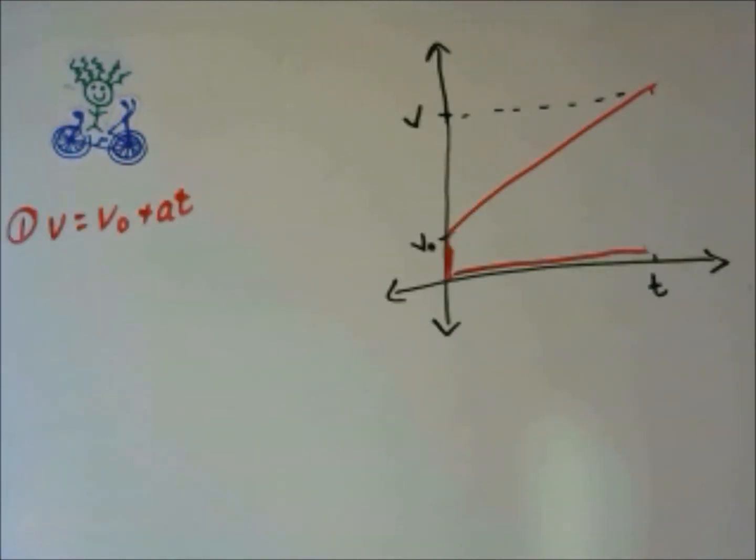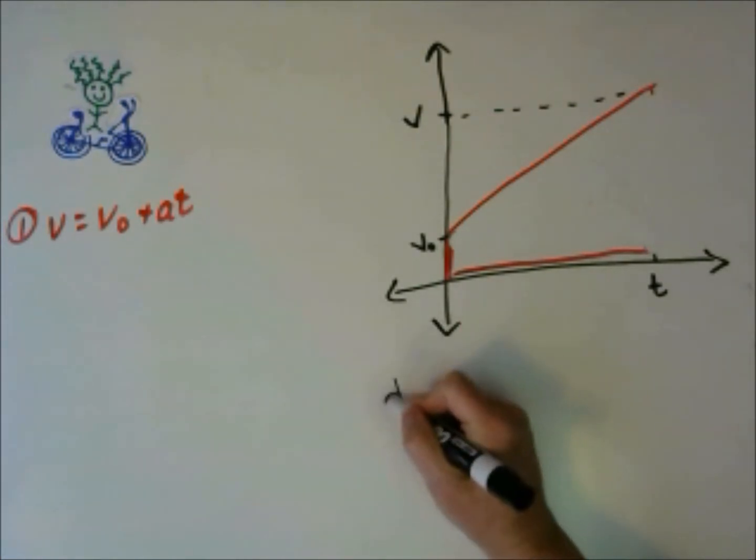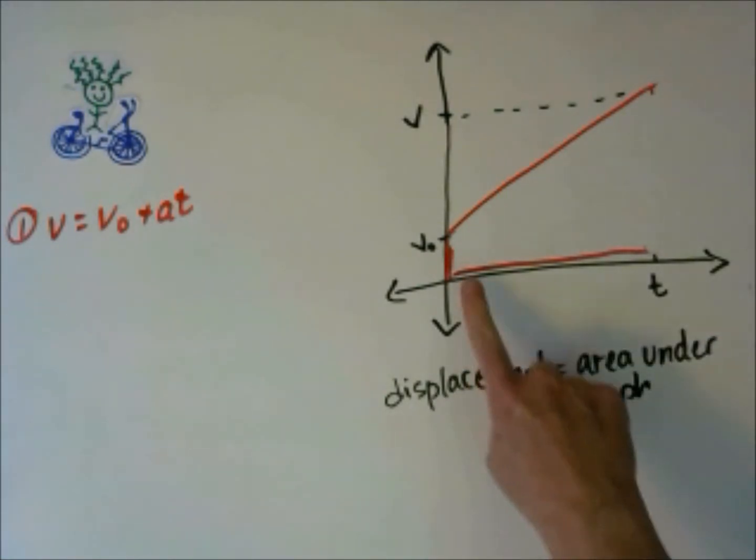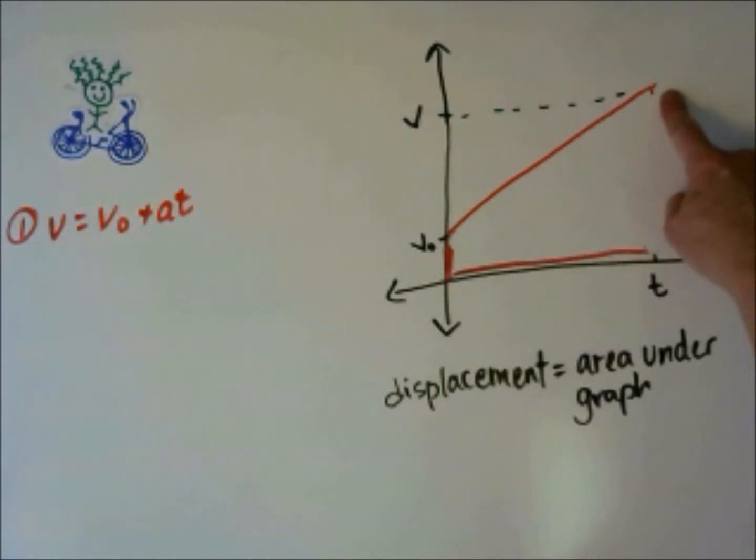Our second kinematics equation we can get by looking at a velocity time graph and remembering that displacement is the area under the graph. For a velocity time graph that starts at velocity V0 and goes to a final velocity traveling at a constant acceleration, which is a requirement for these equations, this is what the graph would look like.